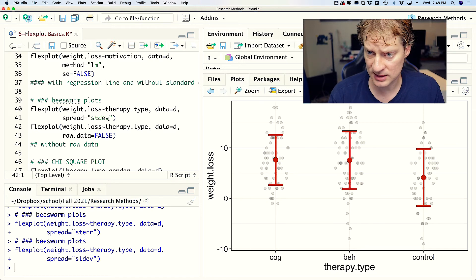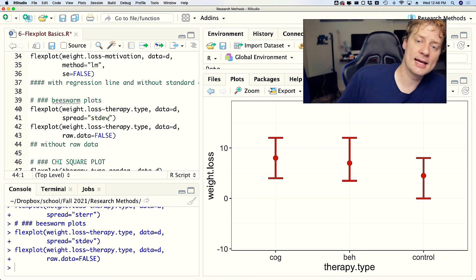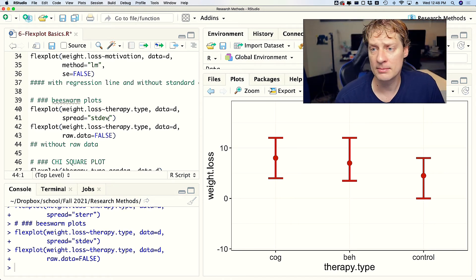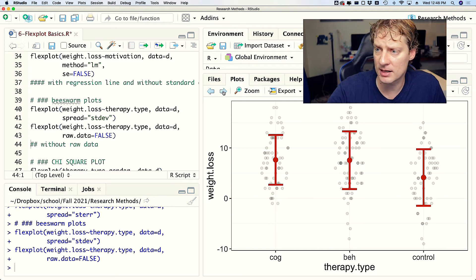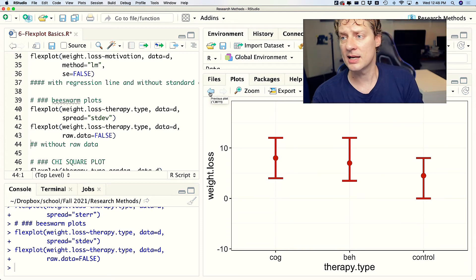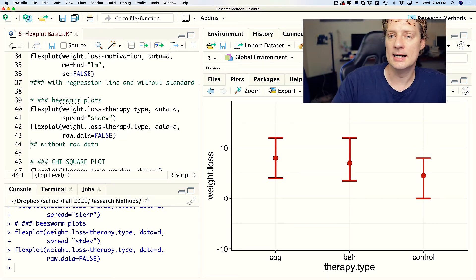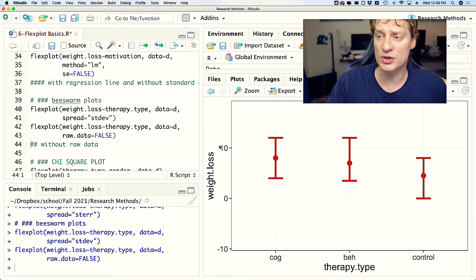Another thing you can do is you can say raw.data equals false, and it basically gets rid of the raw data. But notice comparing this plot to the last plot, notice the y-axis doesn't change. And here is one of the defaults that I have that SPSS does not have. This is what makes SPSS horrible. When you plot plots like this, it will zoom in as close as it can, and it's like making a mountain out of a molehill because you are zoomed in so close, and any trivial differences will be magnified. Whereas Flexplot will preserve the scale of the y-axis.